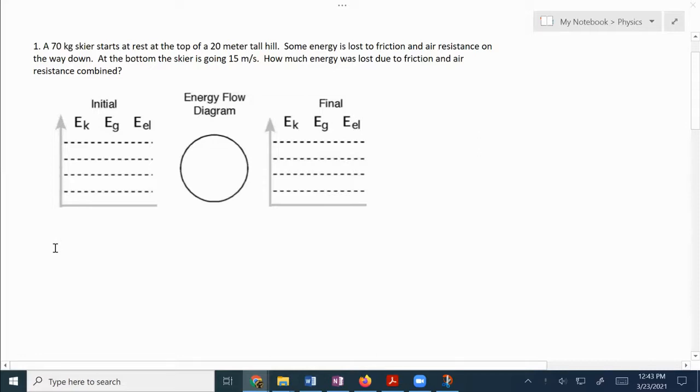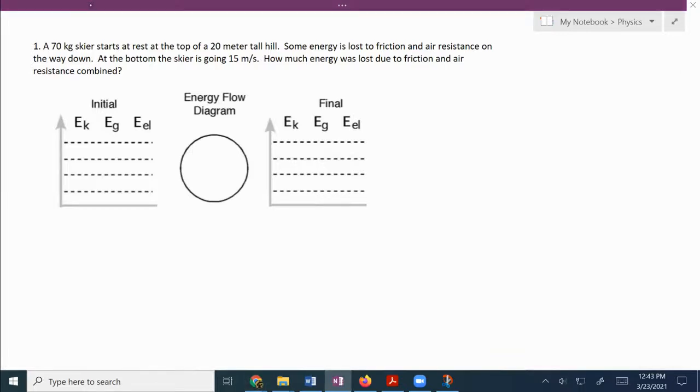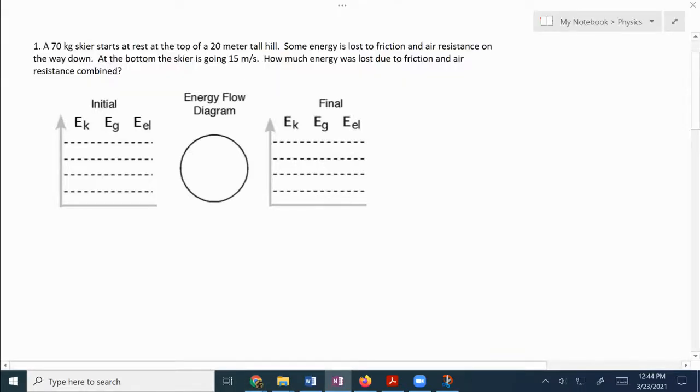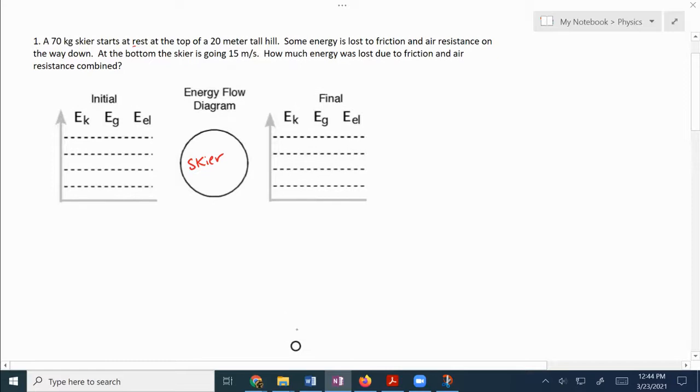So first thing is to ask, well, think about what should we include in the system? And we really probably only want to include the skier on this one. So let's get that, we got the skier. That's pretty much the only thing that we're going to have in the system there. Next thing, the beginning situation is when they're on the top of the hill. And so we need to think about what types of energy do they have? Do they have kinetic energy? Well, it says that they start at rest, so no. Do they have gravitational energy? Well yeah, you're on top of a hill there. And do you have elastic energy? No, there's no springs involved anywhere in this whole situation. So there we go with some gravitational energy.